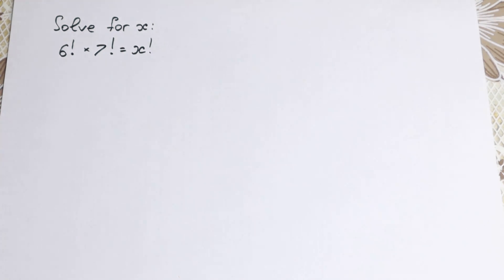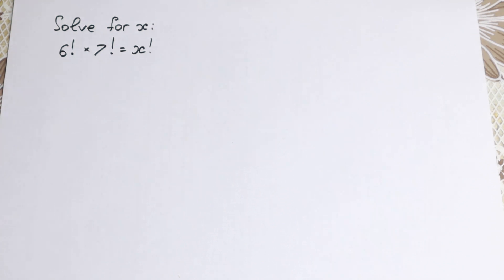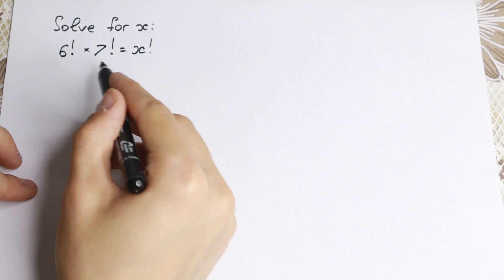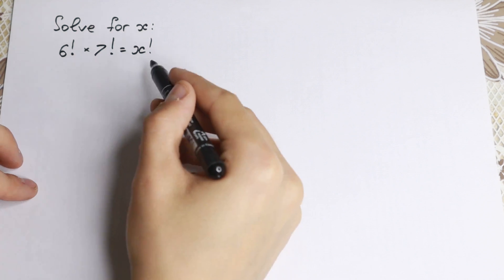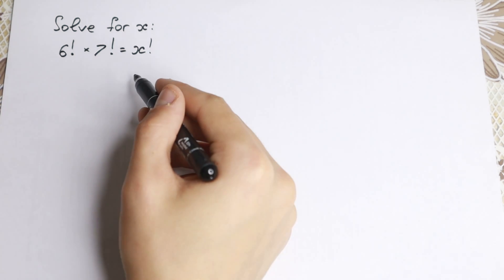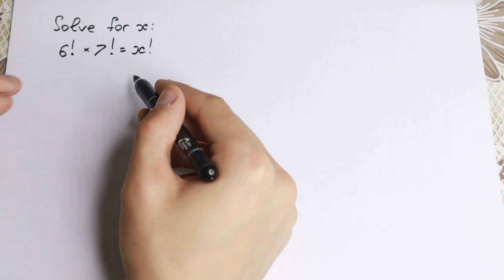Hello everyone, happy to see you here. We have a really interesting problem with factorials: 6 factorial times 7 factorial equals x factorial. On the surface this problem looks like an easy one, but it's actually a tricky problem.